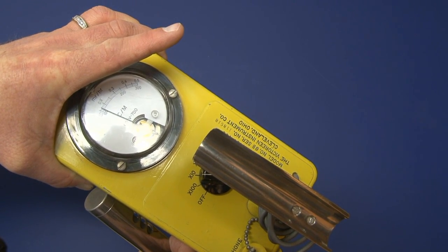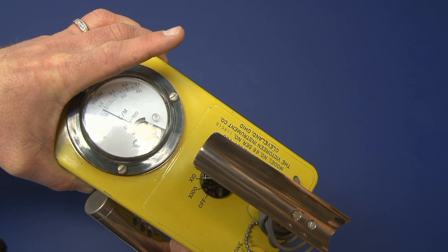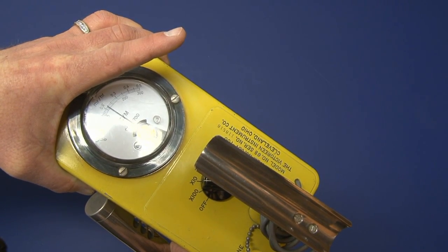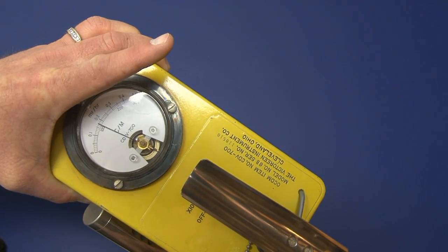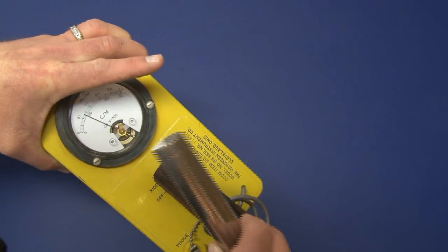The instrument response time is about 8 seconds, so give it time to respond. But you can see this one's reading in that 2 MR per hour range, so this would be okay and we could proceed to use the instrument since it checked out okay.